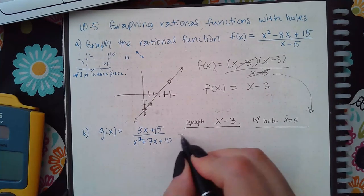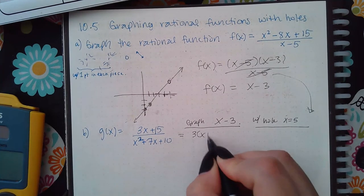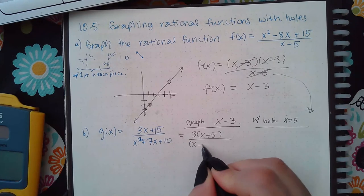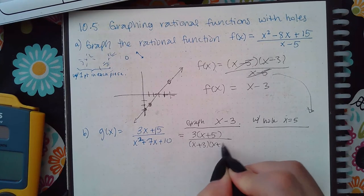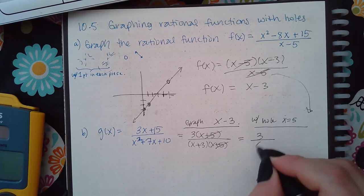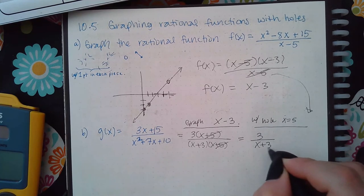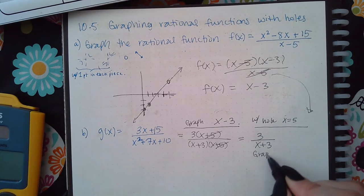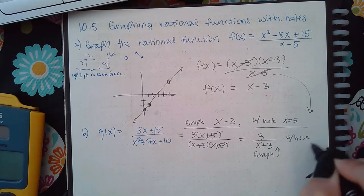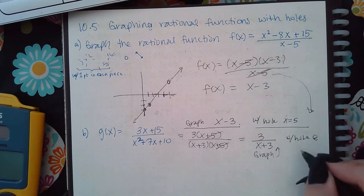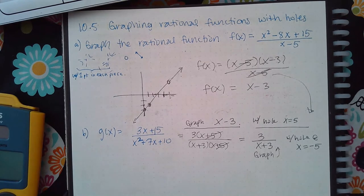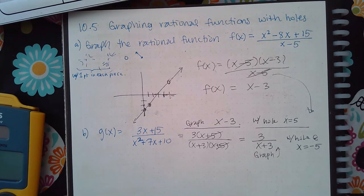For this next problem, I'm going to do the same thing: factor out a 3 and factor the denominator. The common factor cancels, and I end up with a simplified function that has a hole when x equals negative 5.